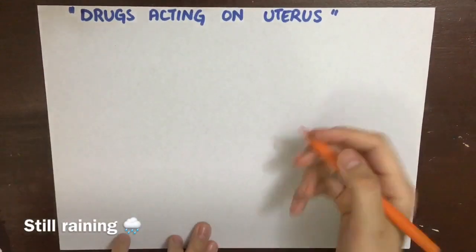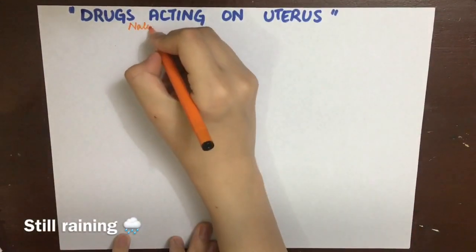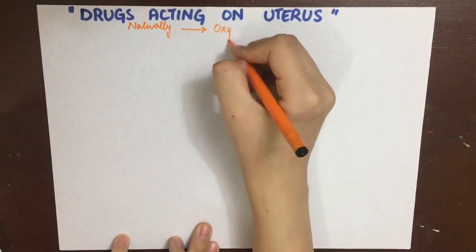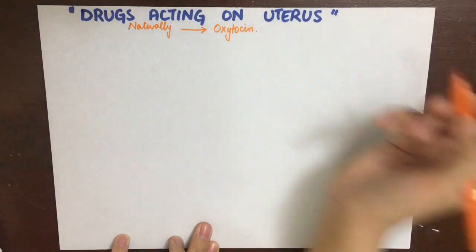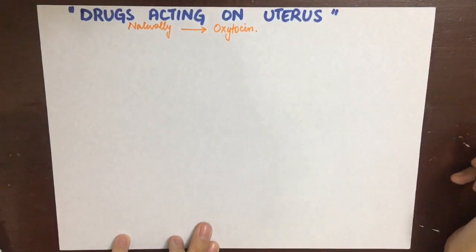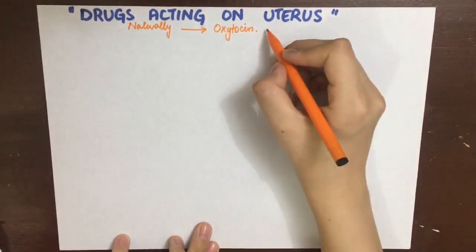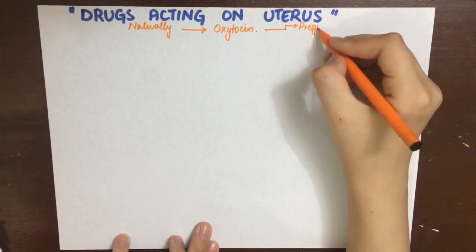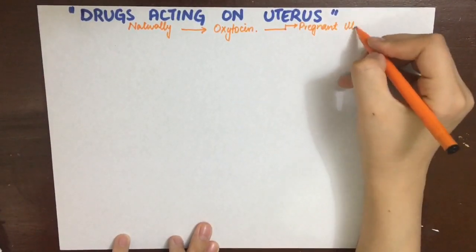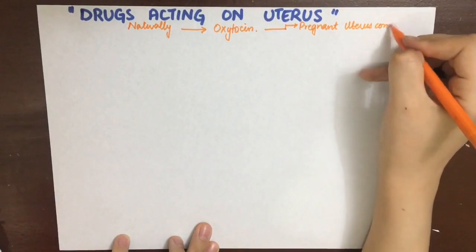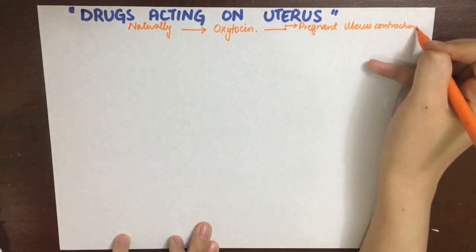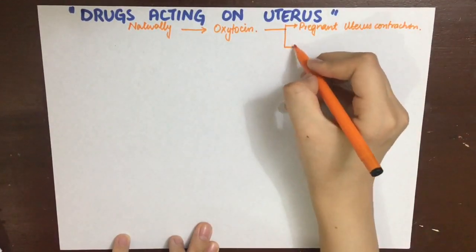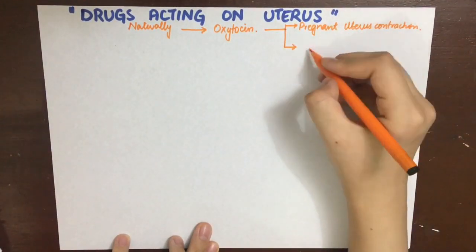Naturally, oxytocin is formed in the supraoptic and paraventricular nucleus of the hypothalamus and stored in the posterior pituitary. It is released in response to parturition, coitus, and/or suckling.